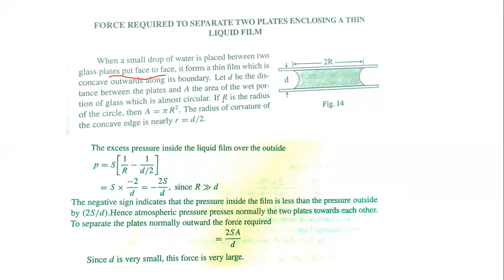The area of cross section is a square by 2. So the radius of curvature of the pond is nearly d by 2R. The excess pressure inside the liquid film, outside, is P equal to S times (1/R minus 1/B) by 2. If we get the approximation, R is very much greater than D/2, we get the excess pressure equal to minus 2S by D. This negative sign indicates that the pressure inside the film is less than the pressure outside by 2S/D.